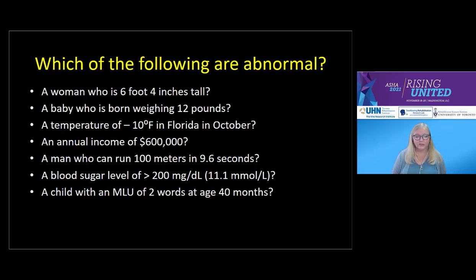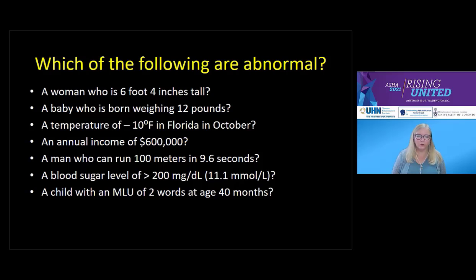All seven of these examples are actually examples of abnormal values — that is, values that fall either at the top or the bottom end of the distribution of values that we typically expect for that particular parameter or function. You probably had no difficulty guessing that the first four items on the slide were abnormal, but as we got towards the second half of the list, perhaps you started to feel less certain of your reactions, and maybe you wanted to run a quick Google search to check against some web-based information about what's normal.